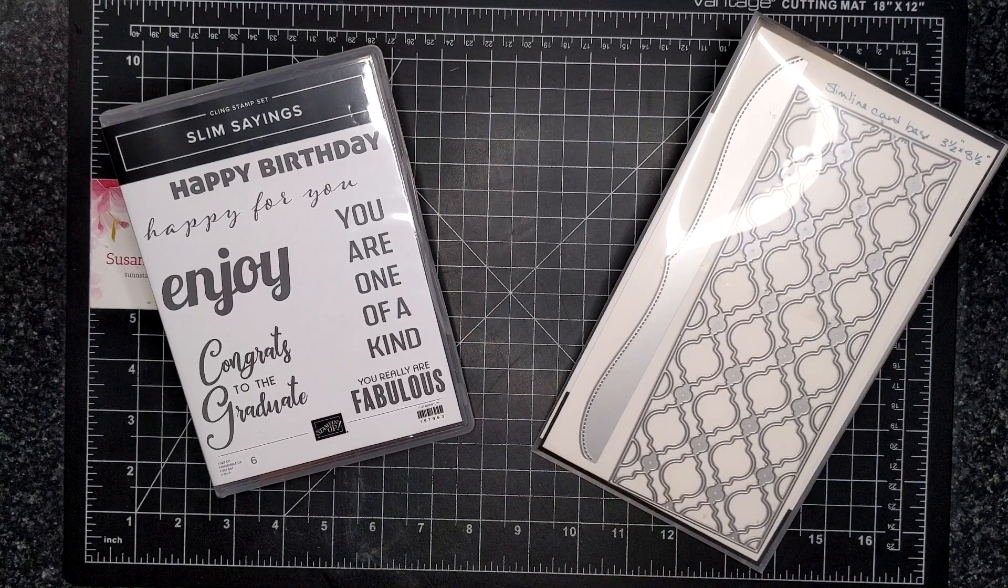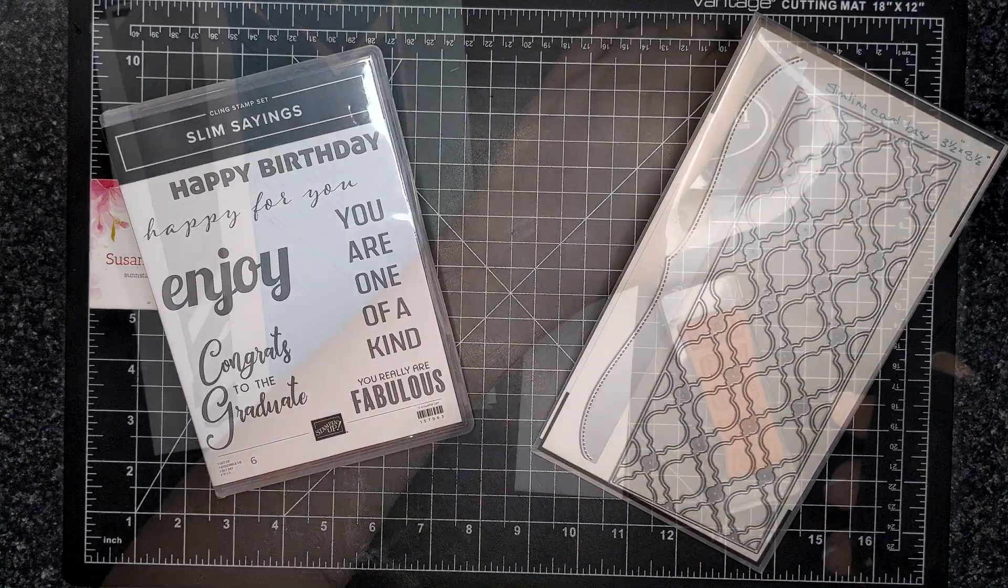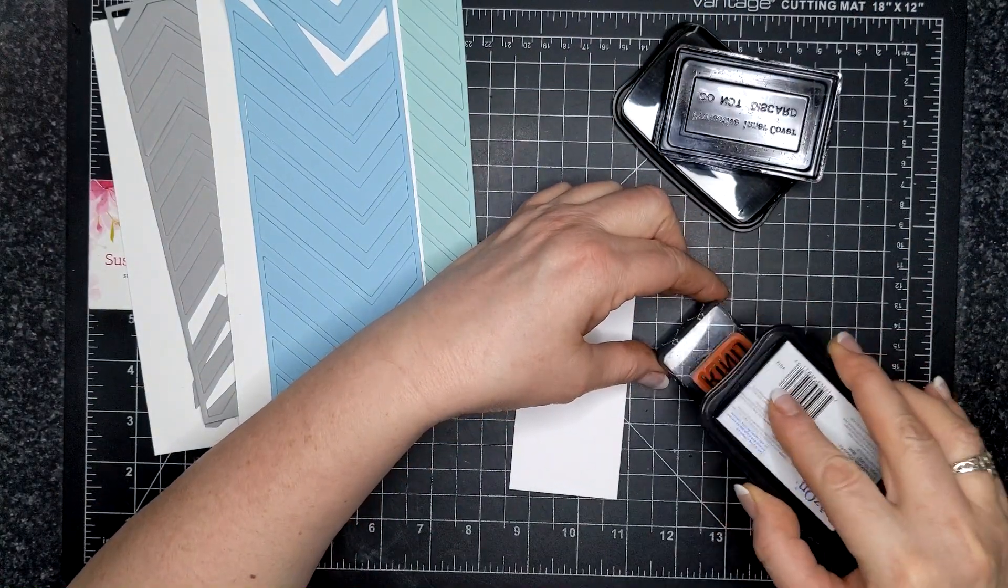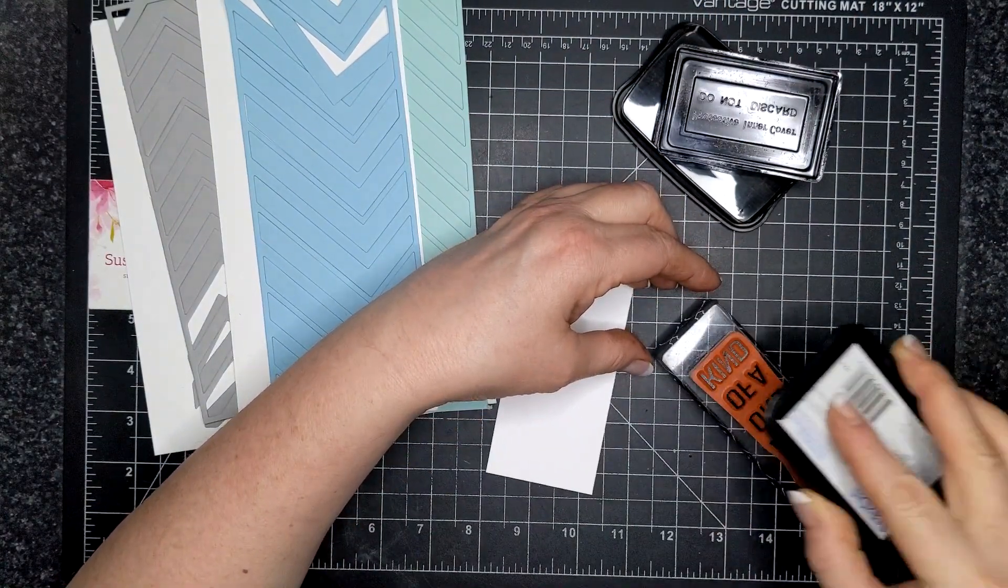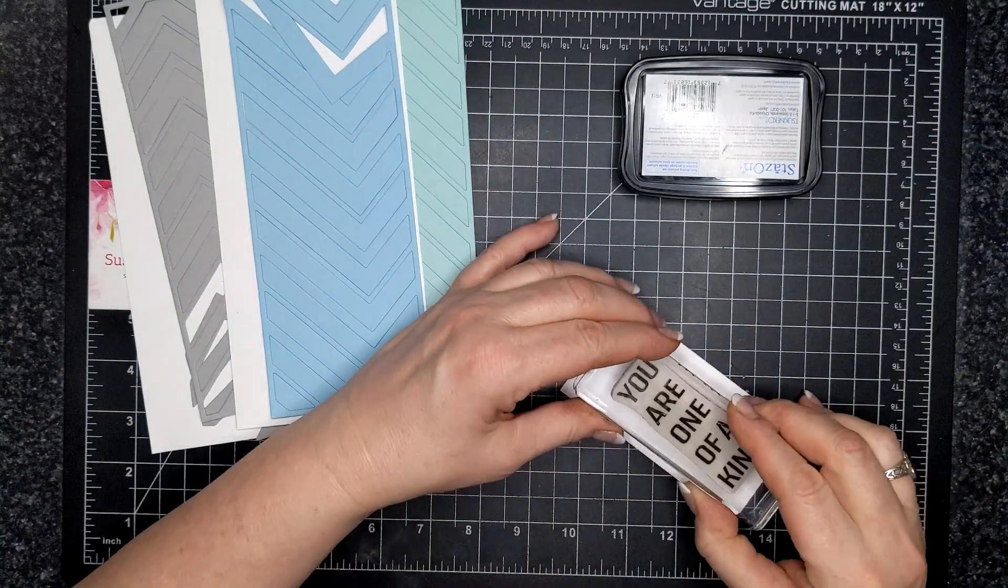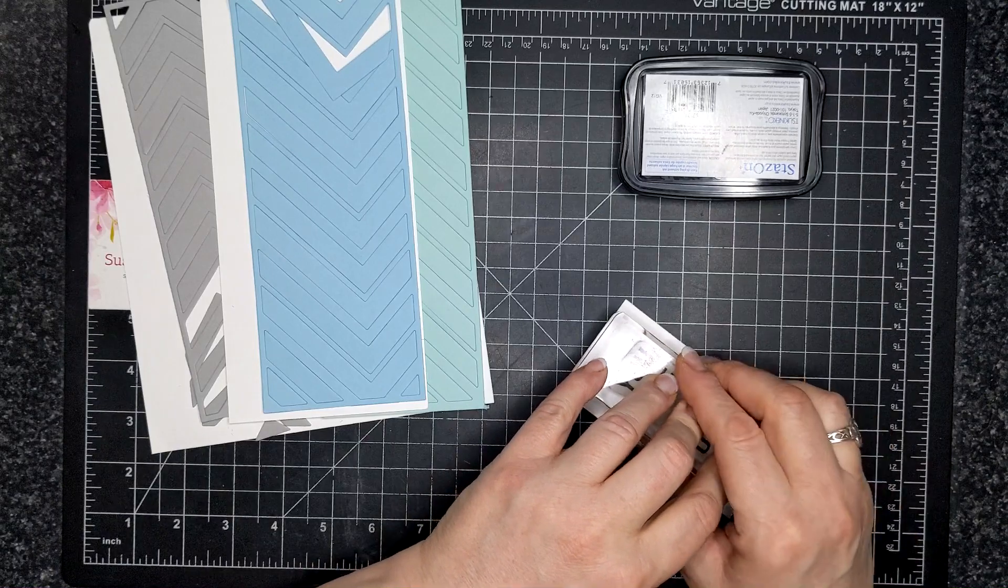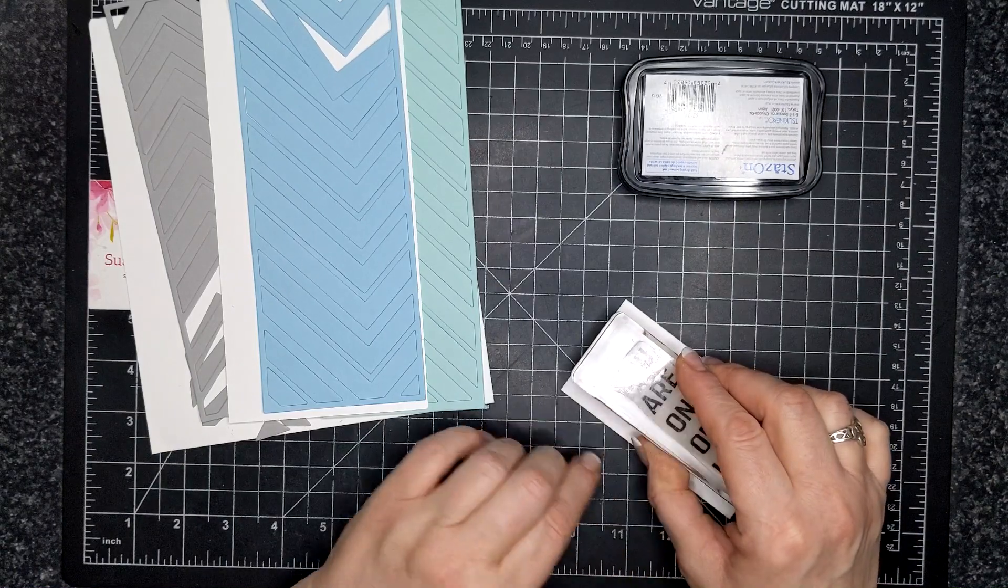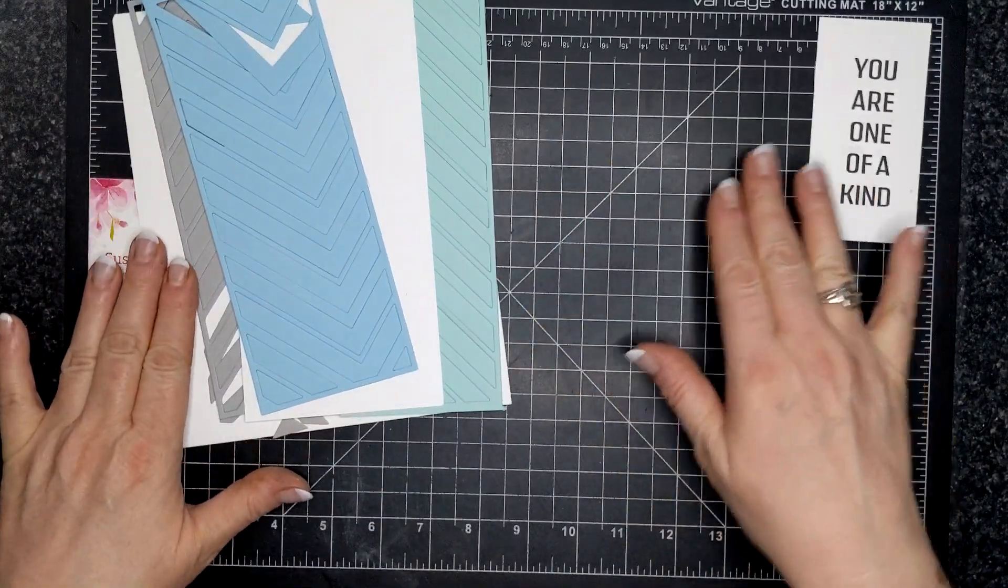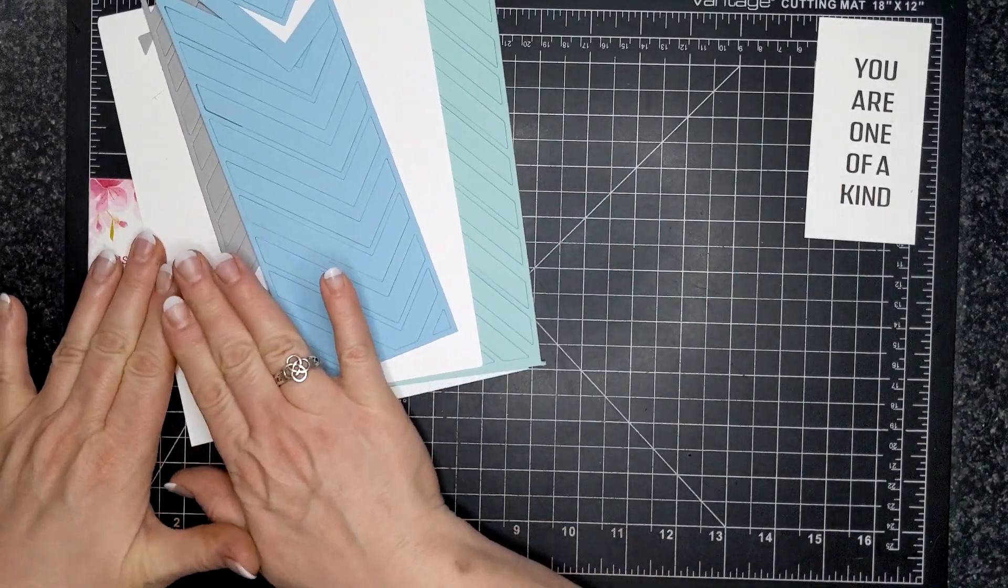I am using the bundle called Slim Sayings for this card design. I've started off inking up the sentiment that says you are one of a kind with Stazen black ink. If you're looking for an ink to give your sentiments that crisp black look, this is your ink, especially if you're using red rubber.